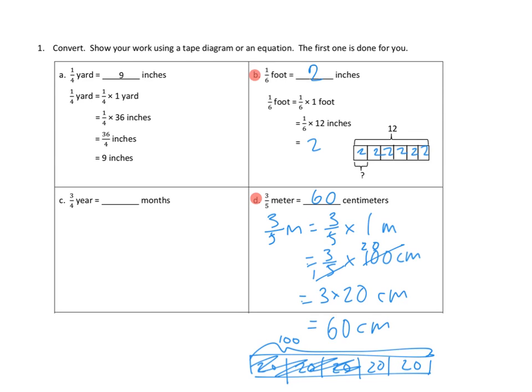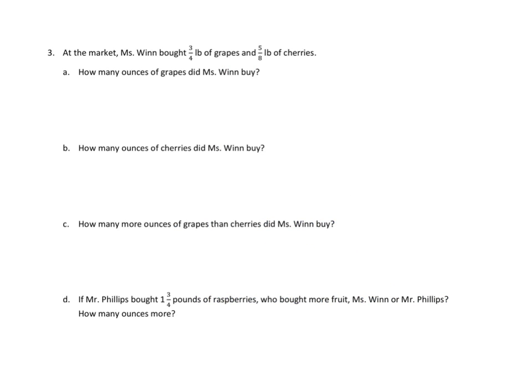Awesome. Let's take a look at one more problem. In fact, I'll do a couple of parts of part three, but I'm not going to do all of them. I'm going to leave some of the fun for you here. So let's take a look at three A and B. At the market, Ms. Wynn bought three-fourths a pound of grapes and five-eighths pound of cherries.